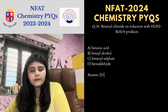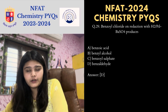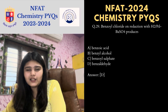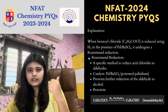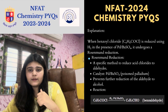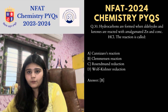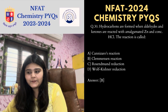Next MCQ: benzoyl chloride on reduction with H₂ and Pd/BaSO₄ produces benzaldehyde — this is the Rosenmund reaction. Also, aldehydes and ketones reacted with amalgamated Zn and concentrated HCl — this reaction is called the Clemmensen reduction. You have to remember all these named reactions.